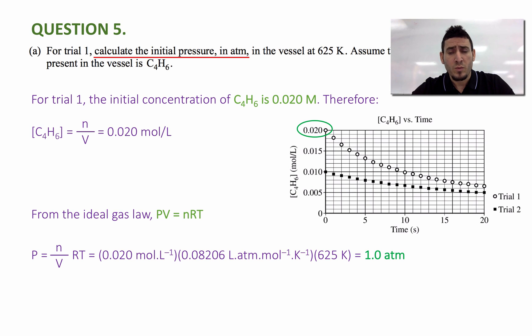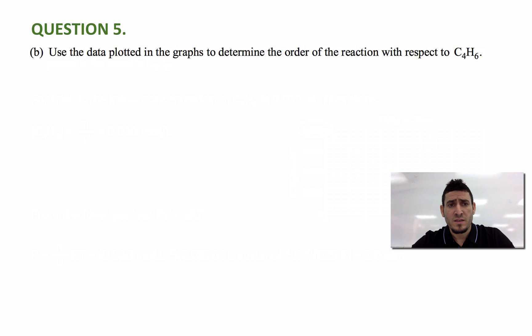So this is the initial pressure of C4H6. Now the next question says use the data plotted in the graph to determine the order of the reaction with respect to C4H6.